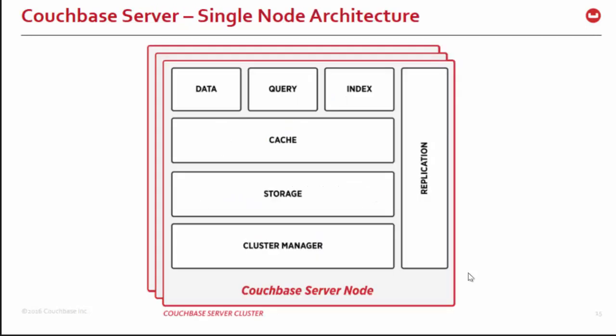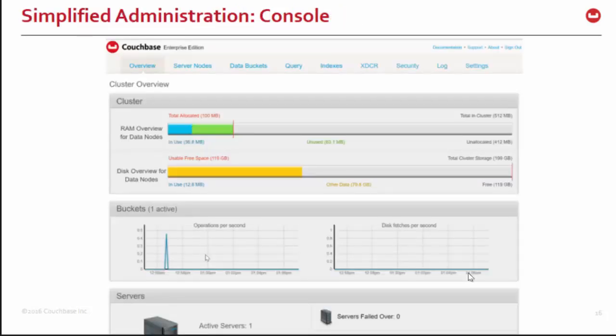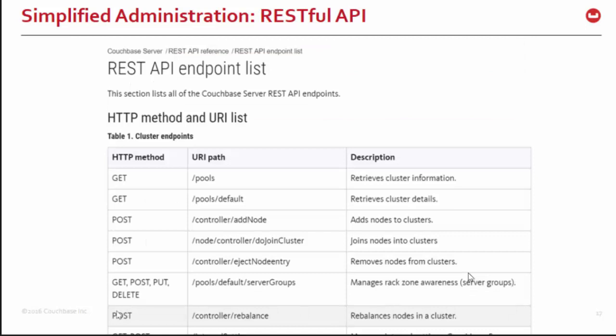This is the single-node architecture. Each node in Couchbase is of equal importance — there's not a master-slave or primary-secondary situation. You can scale nodes out individually. If you want a query service on a machine with lots of processors, that makes sense. If you want a data node on a machine with lots of storage, that makes sense. So you have the ability to do what's called multi-dimensional scaling — you can scale out and scale up. Here's a screenshot of the console showing RAM allocation, operations per second, and RAM usage per cluster.